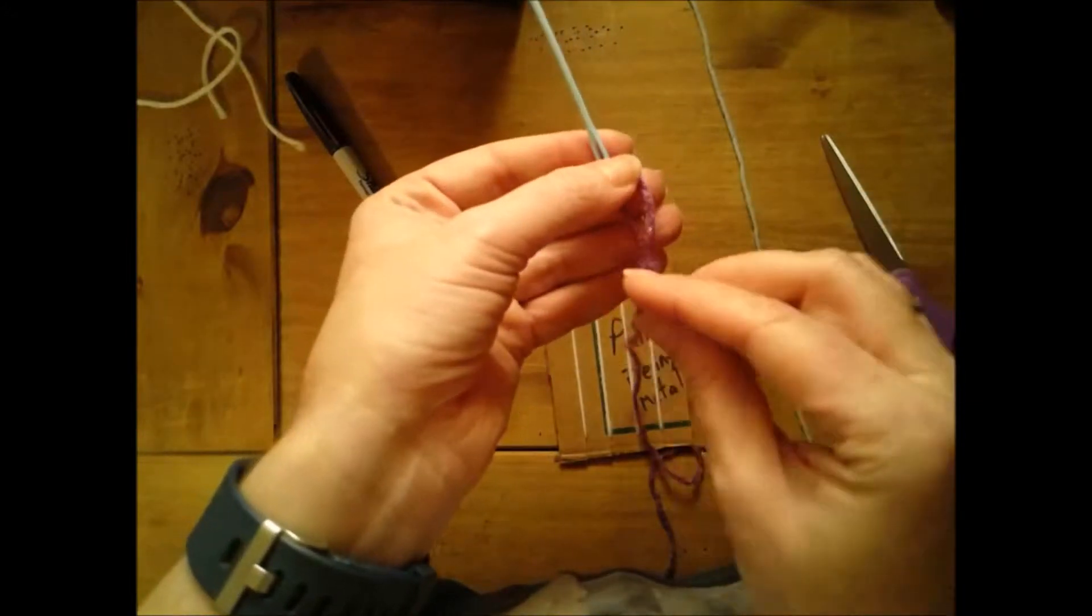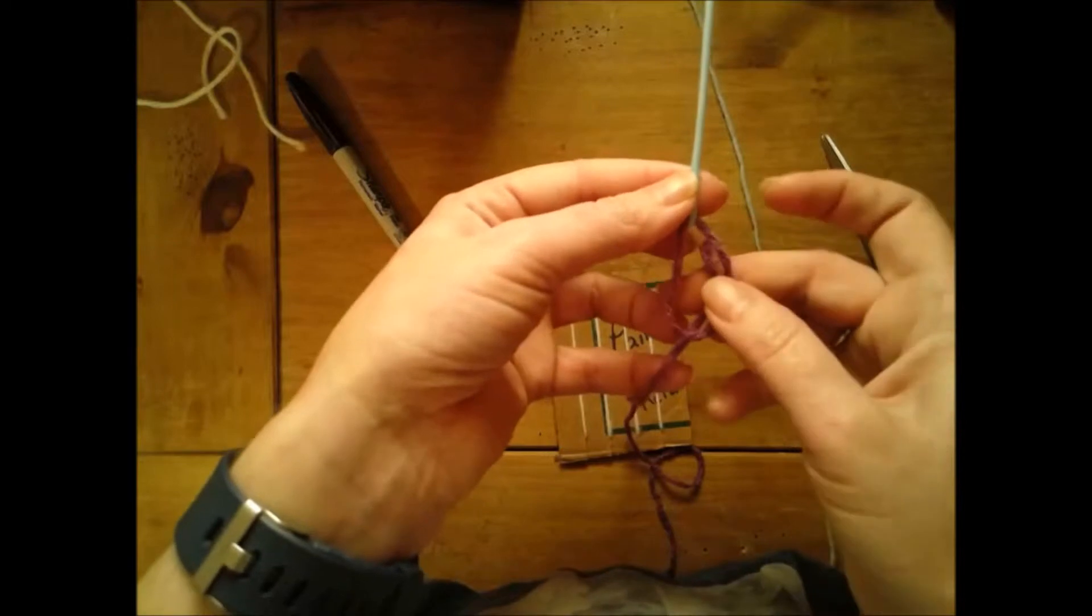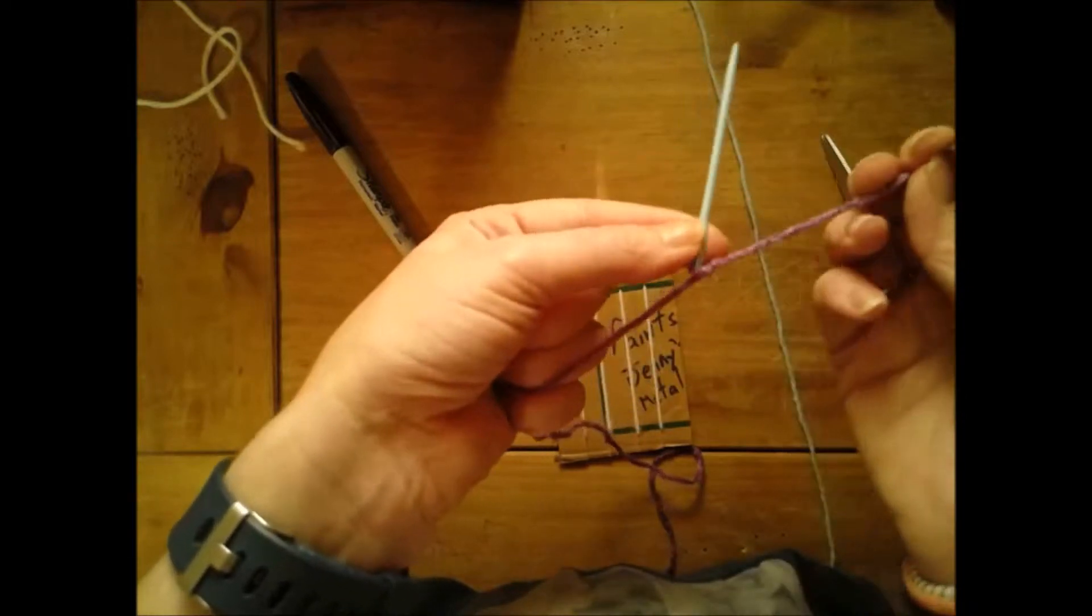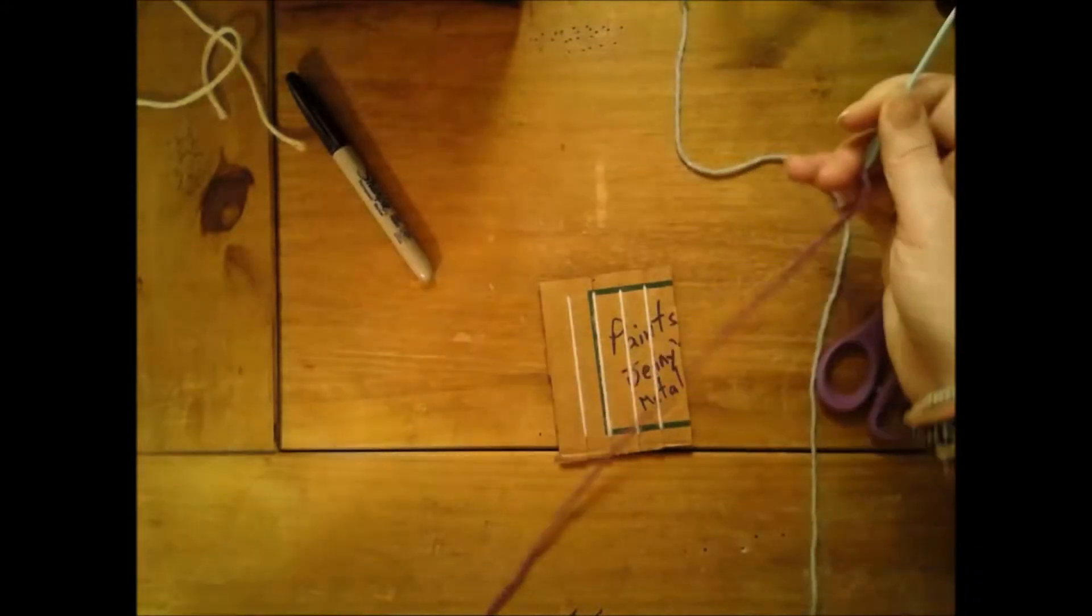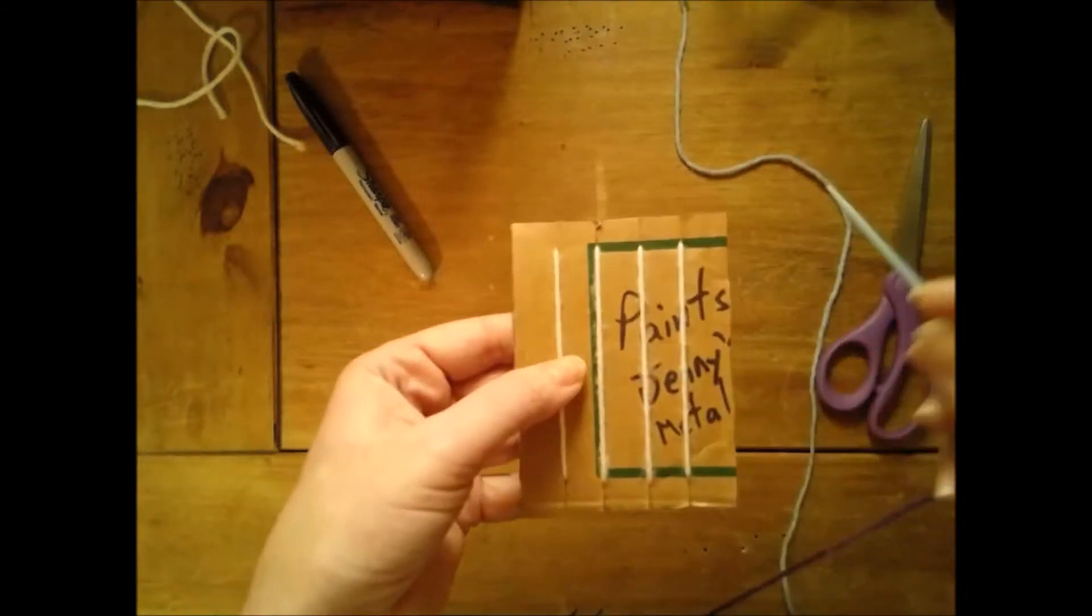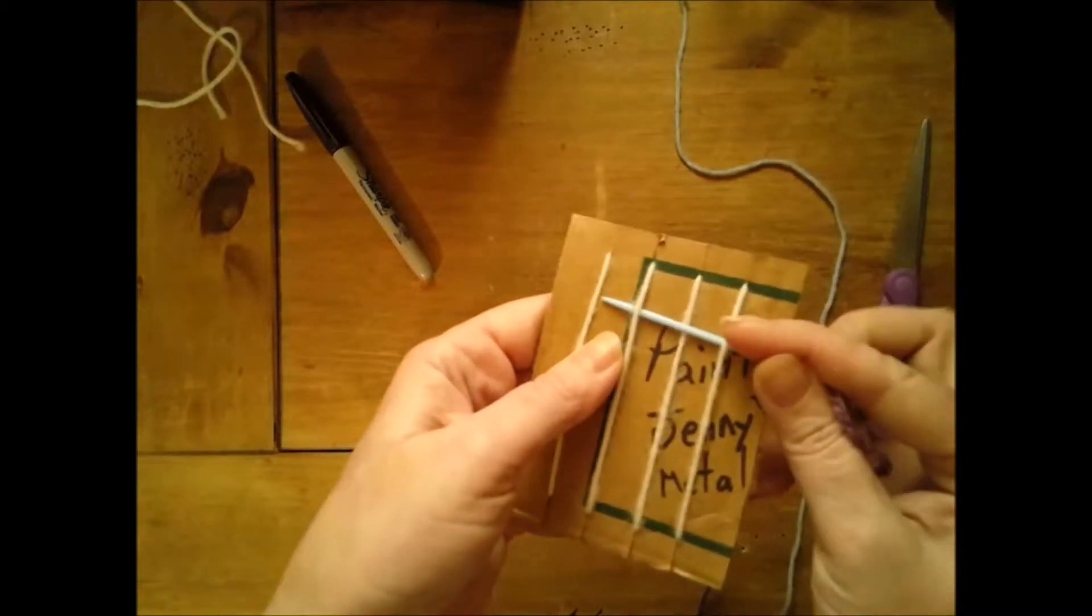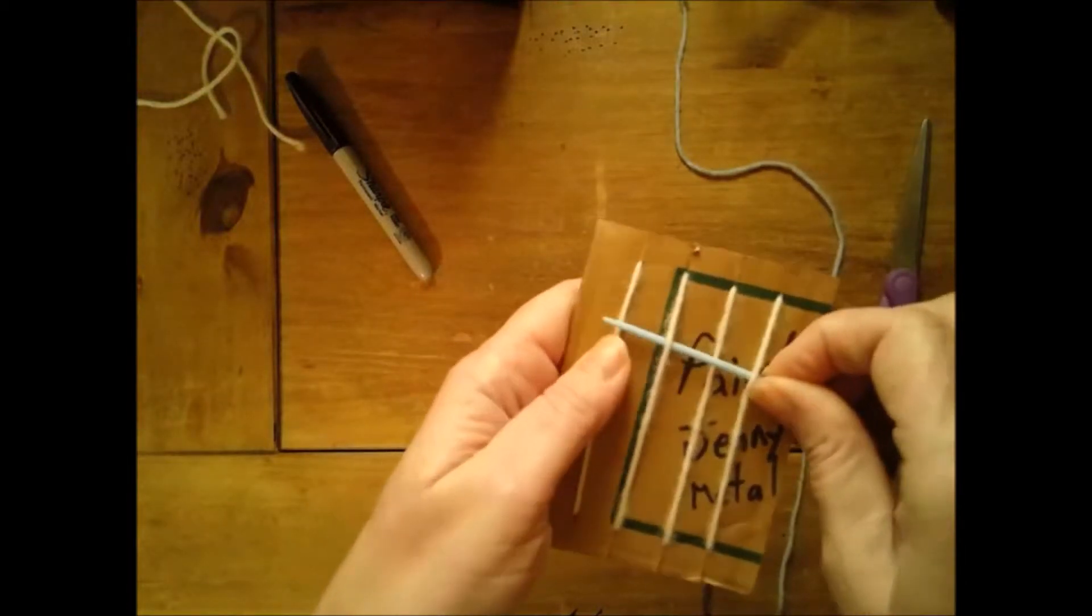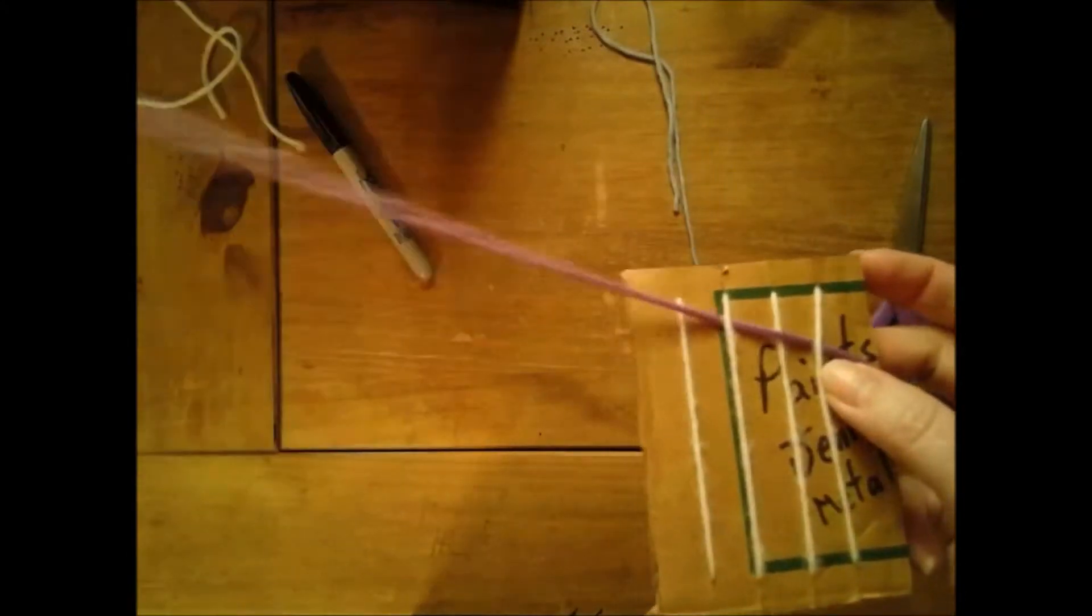You just make a loop, put the end through the loop and tie it so that your yarn is attached to your needle. Now when we're weaving, we're just making a pattern: it's going under, over, under, over, and then you're just going to pull it through.